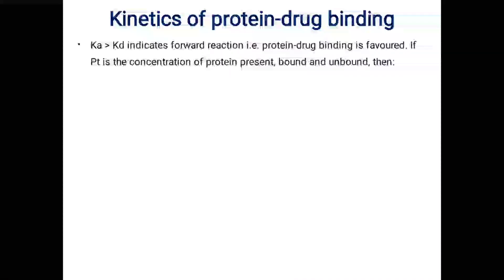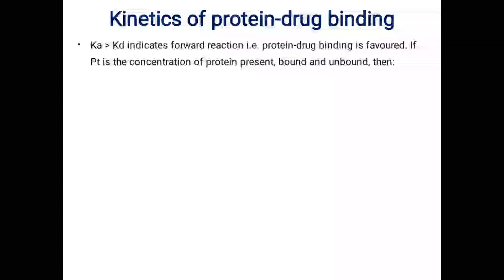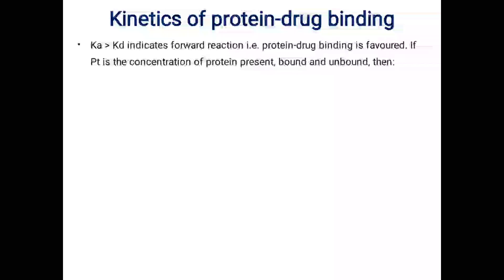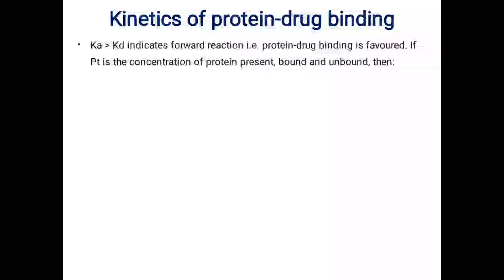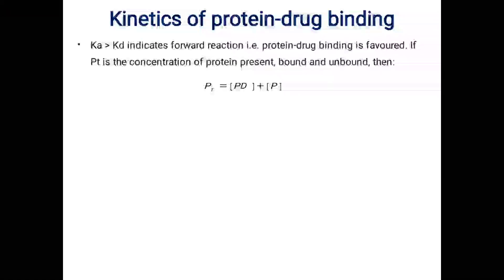When Ka is greater than Kd — when association rate constant is greater than dissociation rate constant — it means association is higher compared to dissociation, so we can say it is a forward reaction and protein drug binding is favored. If Ka is higher, protein drug binding will be higher; if Ka is lower, protein drug binding will also be lower. If Pt is the concentration of total protein, protein is present in two forms: bound and free.